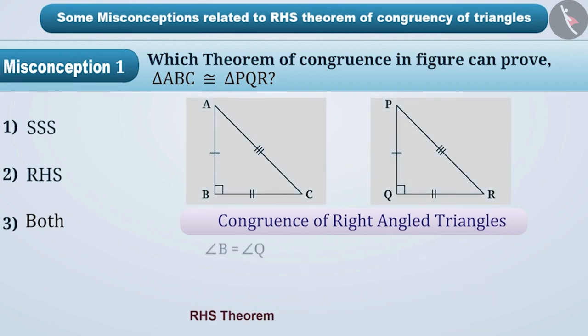In both the triangles, the right angles are equal, one arm is equal to the corresponding arm of the other triangle, and also the hypotenuse is equal.